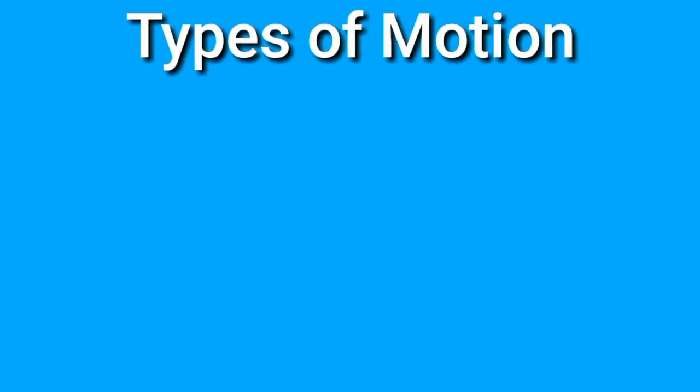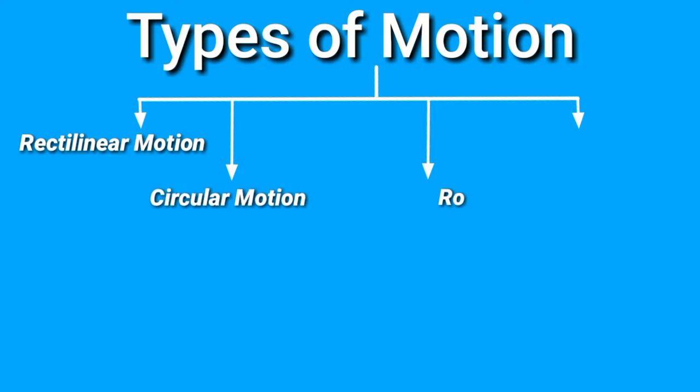Now let's see the types of motion. There are four types of motion: rectilinear motion, circular motion, rotational motion, and periodic motion.